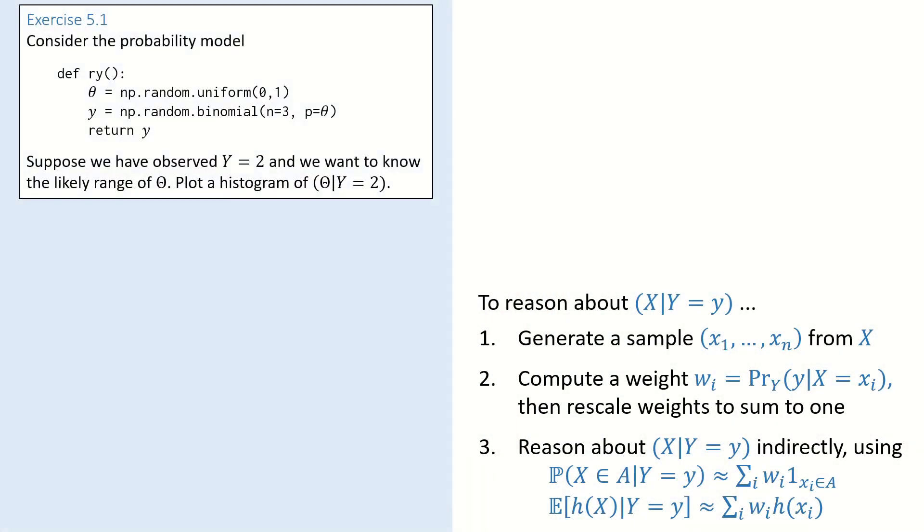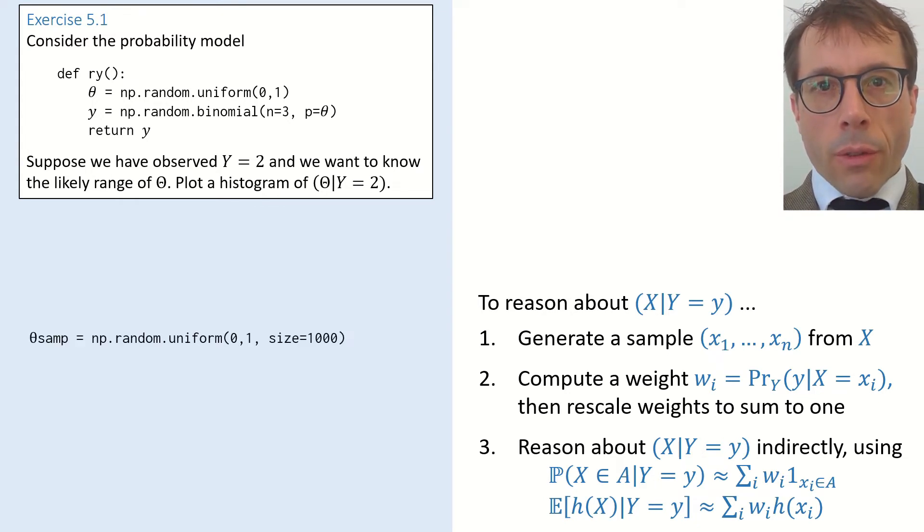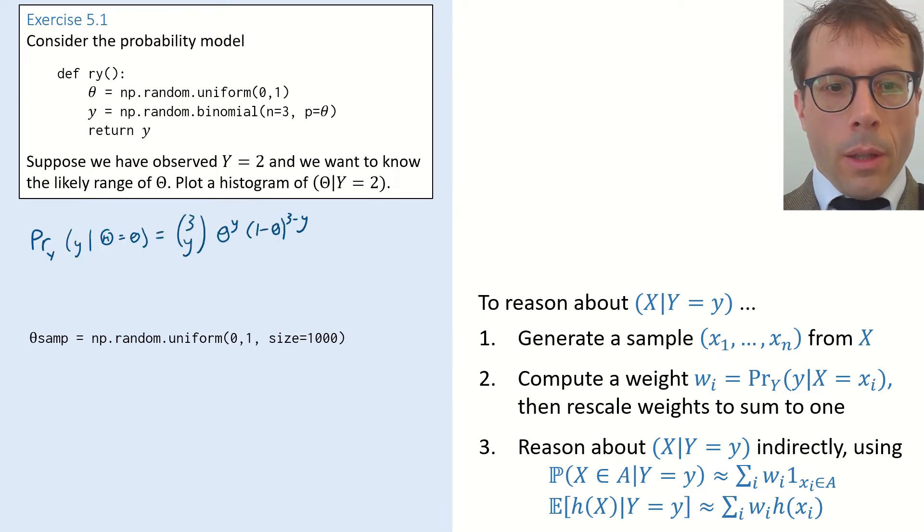Let's work through another example. Here's the question. Consider the following probability model, which has two random variables, theta and y. Suppose we've observed the value of y and we want to know the likely range of theta. Let's just apply the three-step method. Step one, generate a sample of x values. Actually, in this problem, the variables are theta and y, not x and y. So we want a sample of theta values. I'll call them theta-samp.